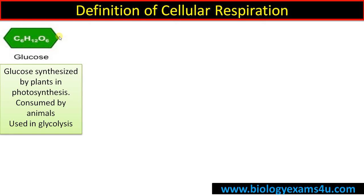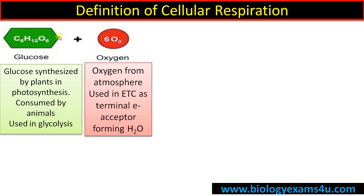Glucose is consumed by animals directly or indirectly, and it is the initial substrate and the first step of cellular respiration, that is glycolysis. Oxygen is from the atmosphere and is used in the electron transport chain as the terminal electron acceptor. It combines with hydrogen, forming water.